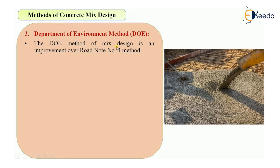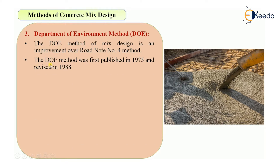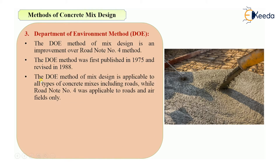The DOE method, that is the Department of Environment method of mix design, is an improvement over the Road Note Number Four method, which we have seen in our previous video. The DOE method was first published in 1975 and revised in 1988, whereas Road Note Number Four was published in 1950. The DOE method of mix design is applicable to all types of concrete mixes, including roads and pavements.